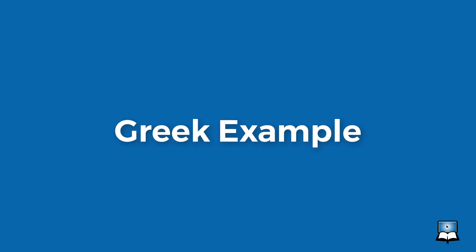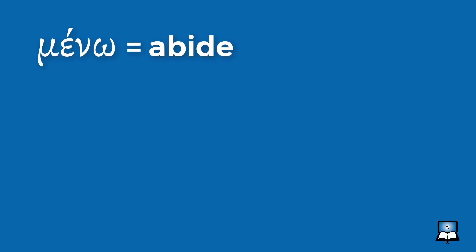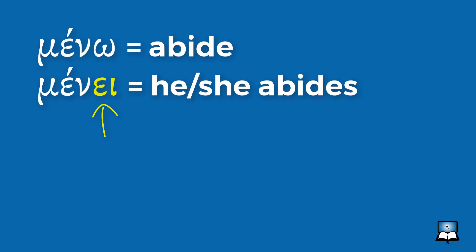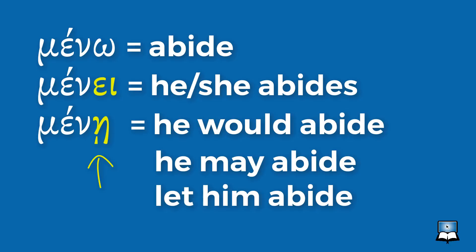Now let's take a look at an example in the Greek language. The Greek word for "abide" is meno. The inflected form mene could mean "he or she abides." If you change the form to mene with an eta and an iota subscript, the meaning changes and could be translated "he would abide," "he may abide," or even "let him abide." Now the Greek language with all of its different parts of speech comes with rules of interpretation that go much deeper than our simple example.